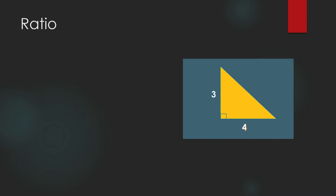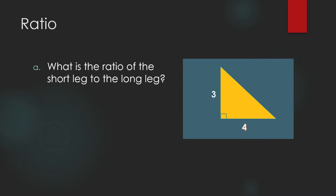Suppose we have a right triangle whose legs are 3 and 4. The legs of a right triangle are the sides that form the right angle, and the side opposite the right angle is called the hypotenuse. The lengths of the legs are 3 and 4. The ratio of the short leg to the long leg is 3 over 4.